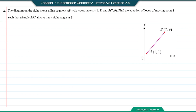Question number 2. The diagram shows a line segment AB with coordinates A(1, 1) and B(7, 9). Find the equation of the locus of moving point S such that triangle ABS always has a right angle at S. A few possible positions for point S are drawn so that it has a right angle at S. The locus S is going to be a circle. In this case, we don't know the ratio of SB and SA, but no matter where S is positioned, the line SB is always perpendicular to the line SA. When we multiply the gradients of two perpendicular lines, the answer is equal to negative 1.